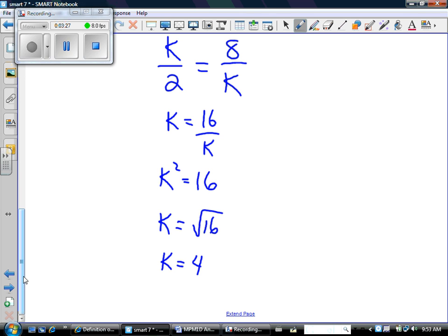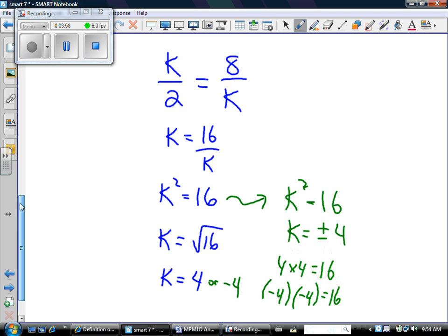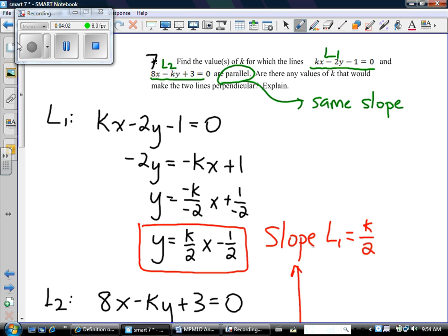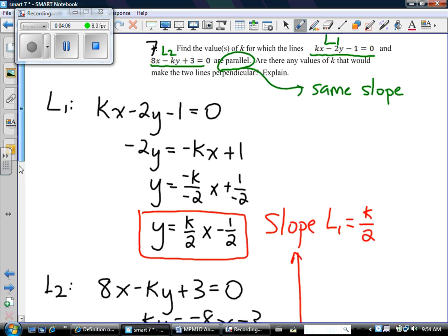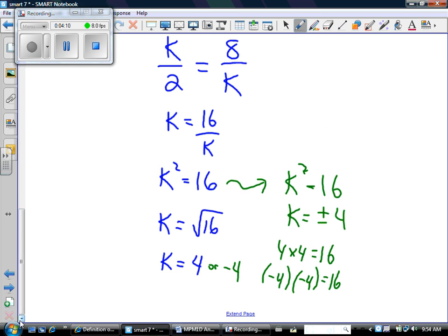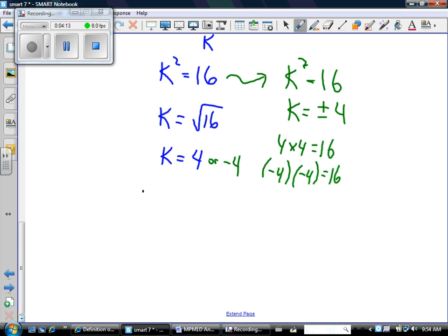Here's a little side note. Technically, when you take the square root of a number, you're supposed to get two answers. Because we know that 4 times 4 is 16, but so is negative 4 times negative 4. So even though k equals 4, negative 4 would also work. That's a good thing to think about when you're heading into grade 10. So go back to the beginning. Find the value or values of k for which these lines are parallel. We could say if k equals 4 or negative 4, L1 and L2 are parallel.